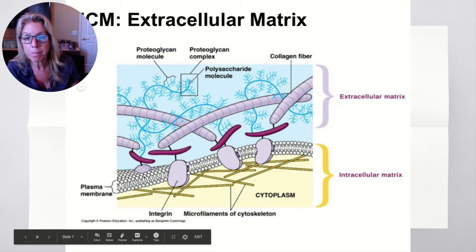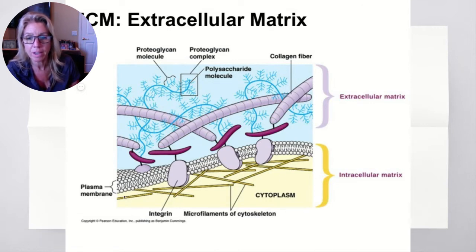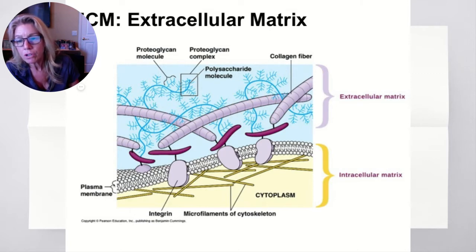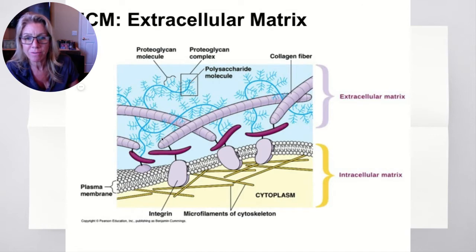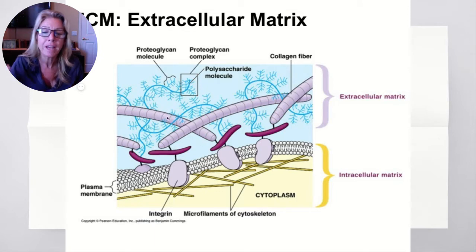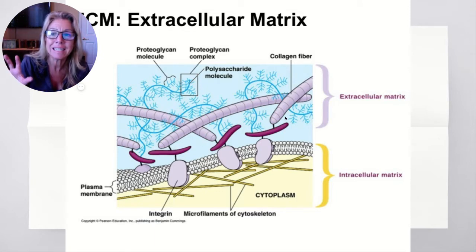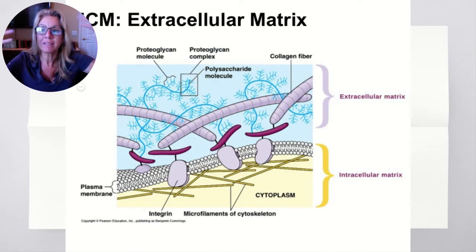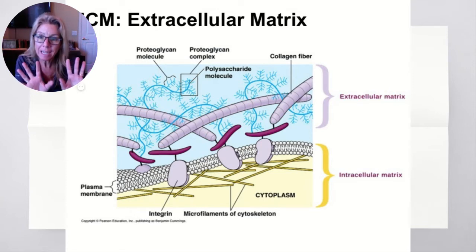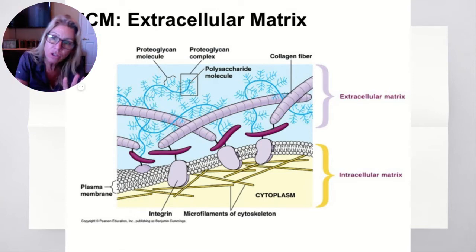Here's your phospholipid bilayer. You can see parts of the cytoskeleton — which look like chopsticks or pickup sticks. Then outside, look at all this stuff — you have collagen right here, you have carbohydrate side chains in here. That's referred to as the ECM — the extracellular matrix — attached to the cell's outer surface.